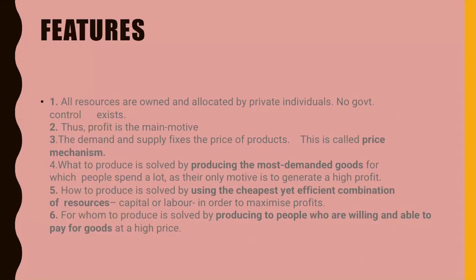The features of the market economic system are: all resources are owned and allocated by private individuals; no government control exists; profit is the main motive; and demand and supply fix the price of products, which is also known as the price mechanism.